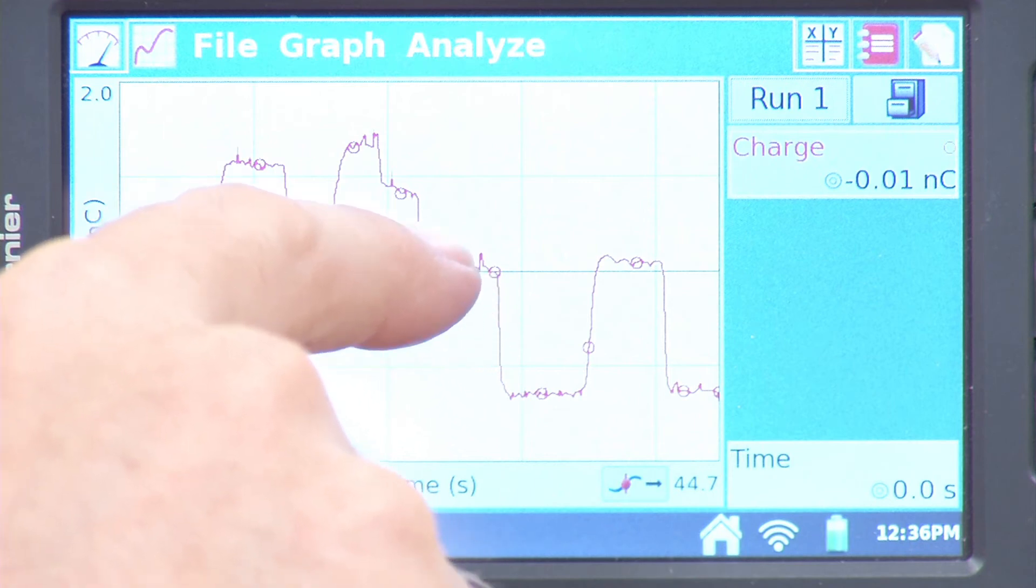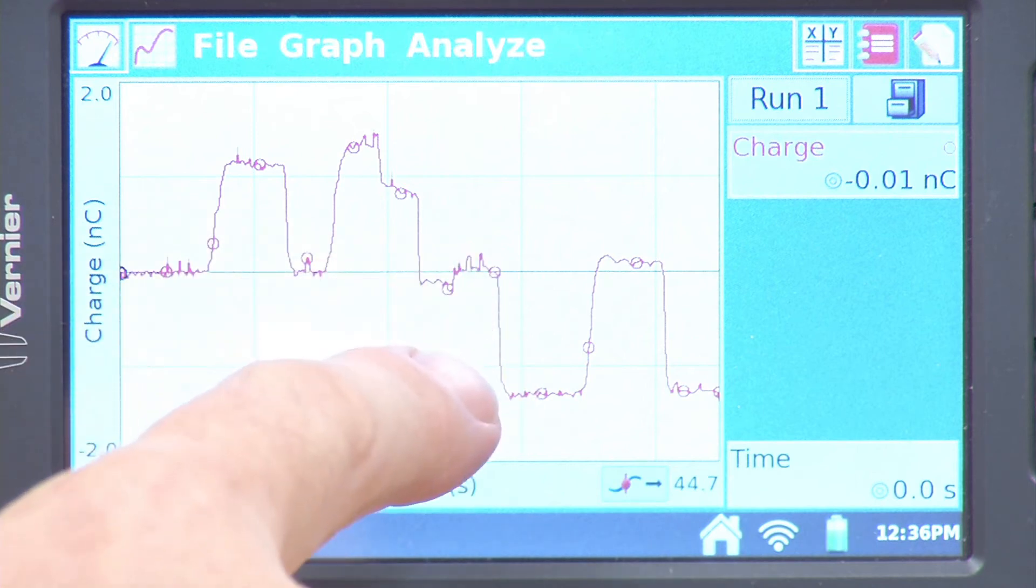And then, we take the ground wire, and we took it back and plugged it into where it was attached before, and now when we remove the charge separator, all of a sudden, we end up with the pail showing that it has a negative charge,